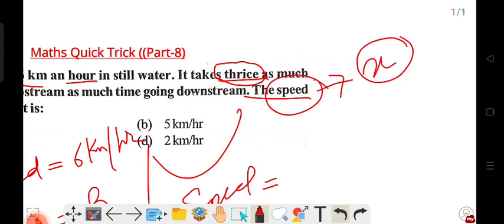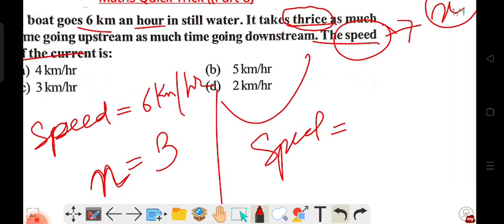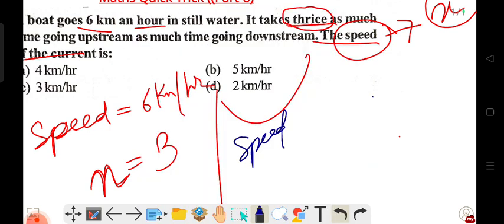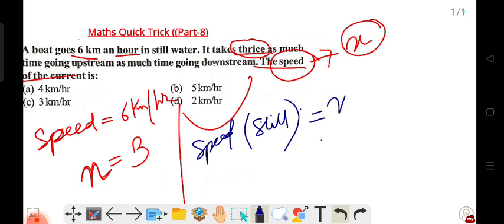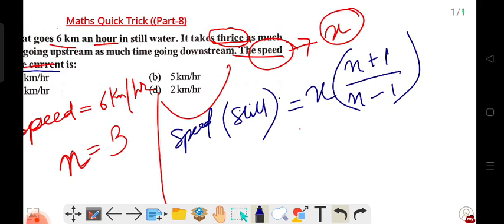The formula is: current speed x equals still water speed times (n-1)/(n+1). Here x is the current speed we need to find. The still water speed is given as 6 km/hr.